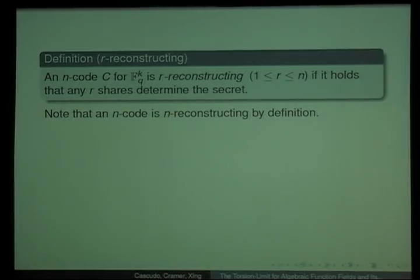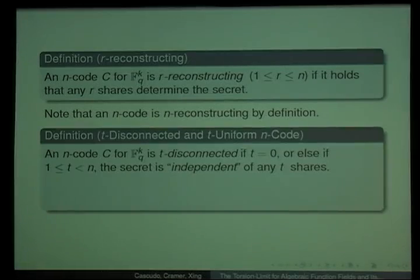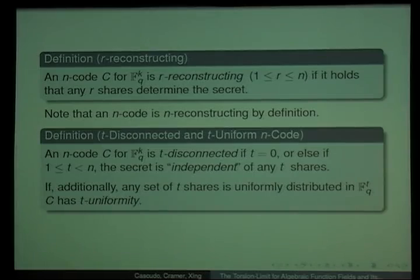We define two properties about n-codes. First, r-reconstructing means that any set of r shares determine also the secret. An n-code is n-reconstructing by the definitions before. The contrary property is that a code is t-disconnected if any set of t shares is independent from the secret. If the sets of t shares are uniformly distributed in F_q^t, we say that the code has uniformity.